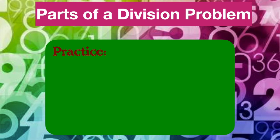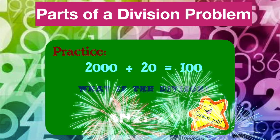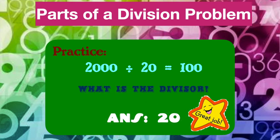Now that you know that, can you identify the parts of a division problem? Look at this equation: 2,000 divided by 20 is equal to 100. What is the divisor? If you said 20, you are correct. 20 is our divisor. It is the number we are dividing by.